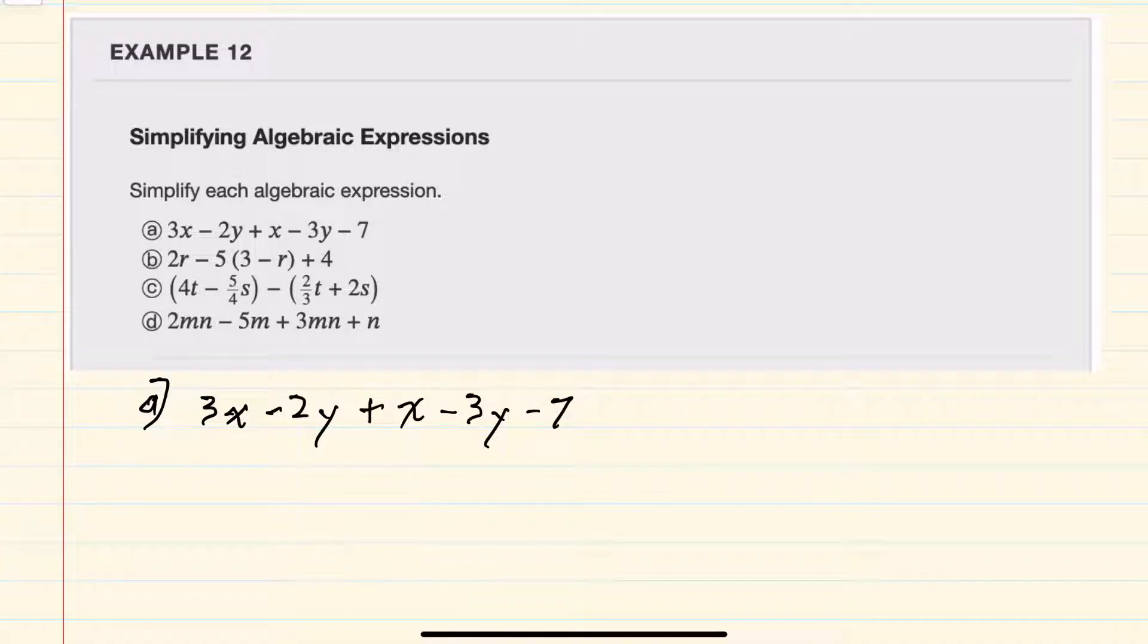Starting with A here, we can see that of the five terms listed, some of those are like terms, meaning that they have the same variables raised to the same powers. So for example, 3x and our 1x here, those can be added. So combining would give us a 4x.